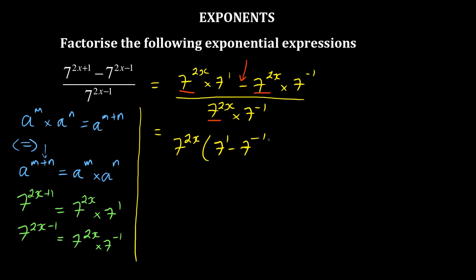All over 7 to the power 2x times 7 to the power negative 1. Now if you further simplify, that can now cancel out.